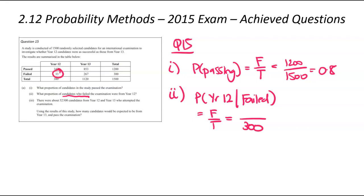Of those 300, how many of them were from year 12? That was 33. We plug that into a calculator, we're going to get 0.11. About 11% of the people who failed were from year 12.